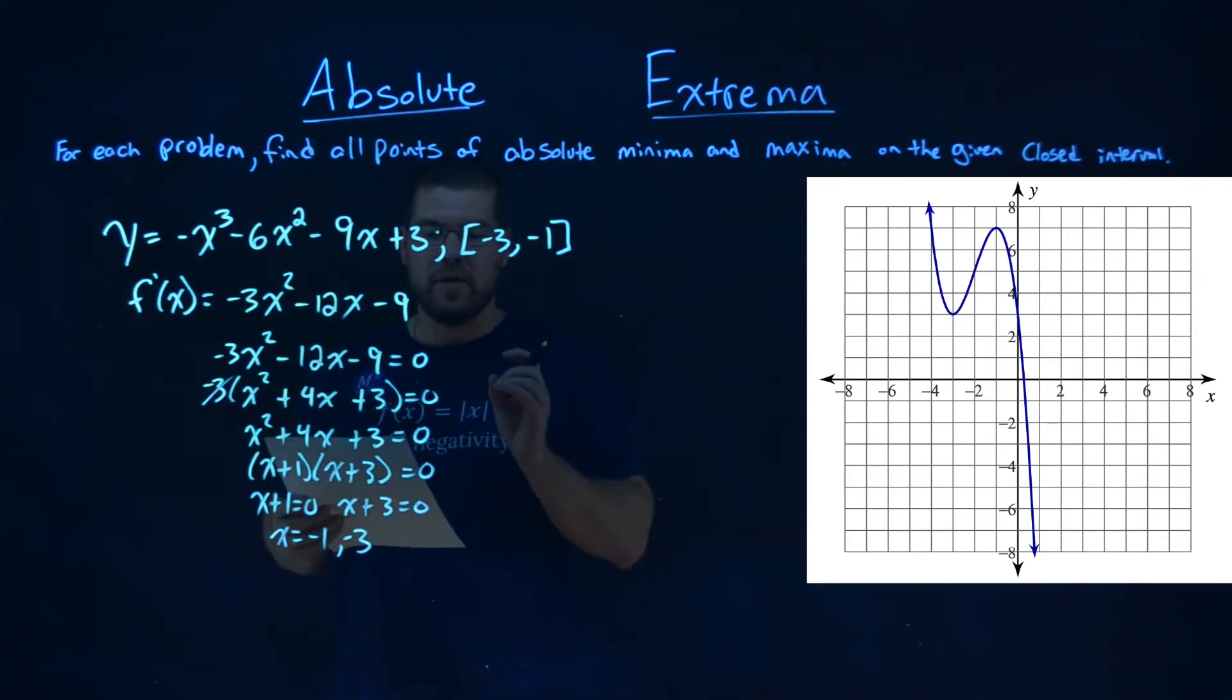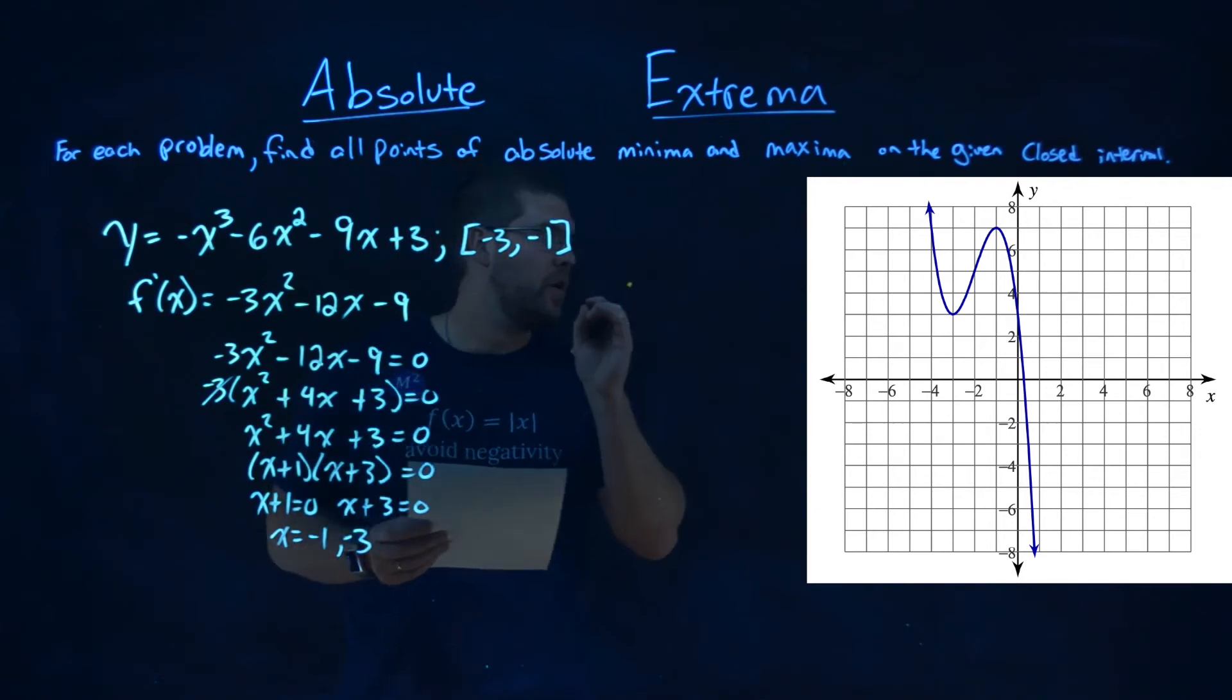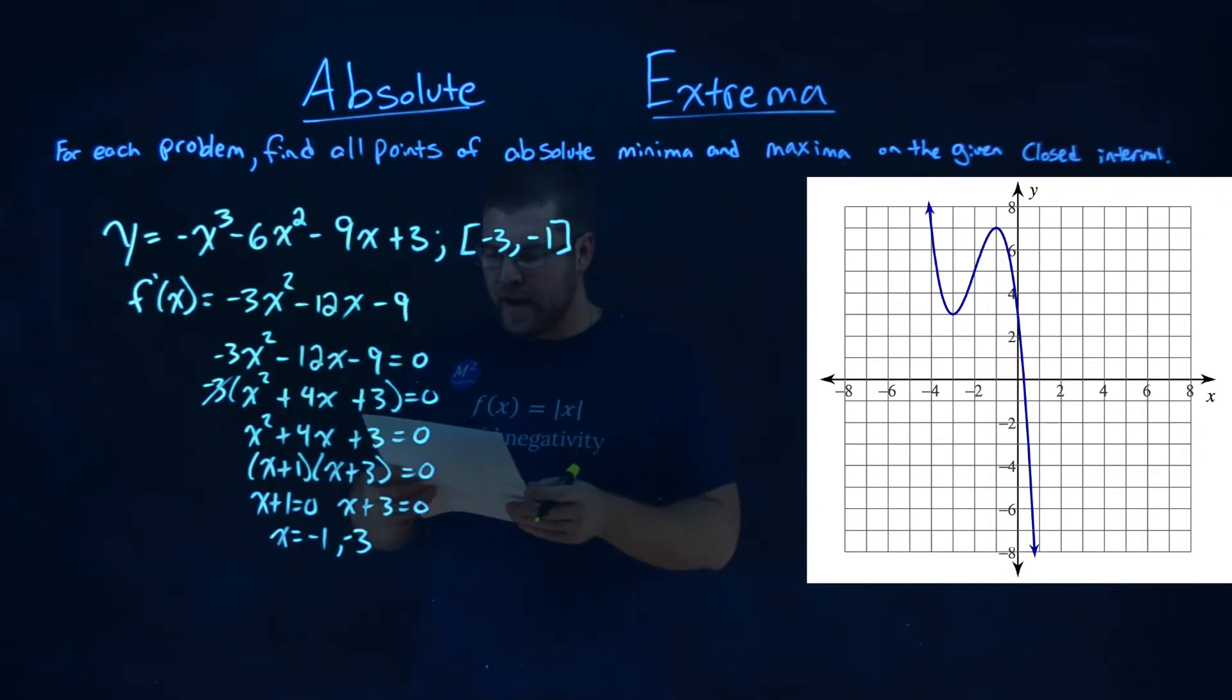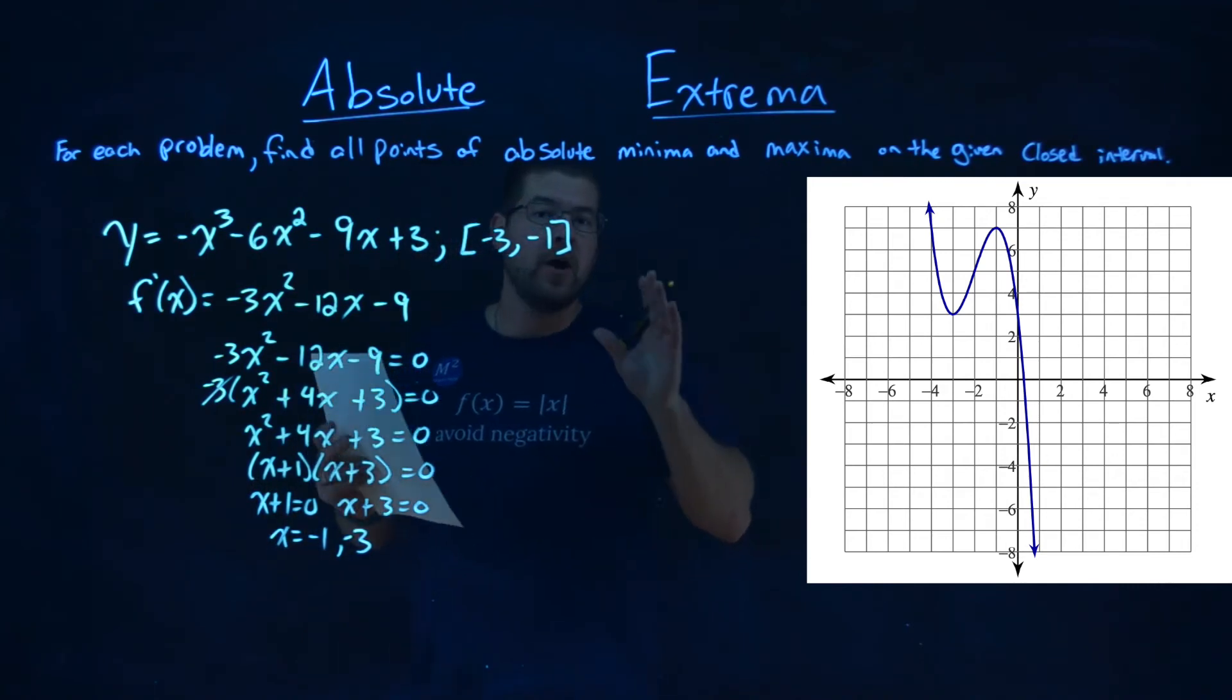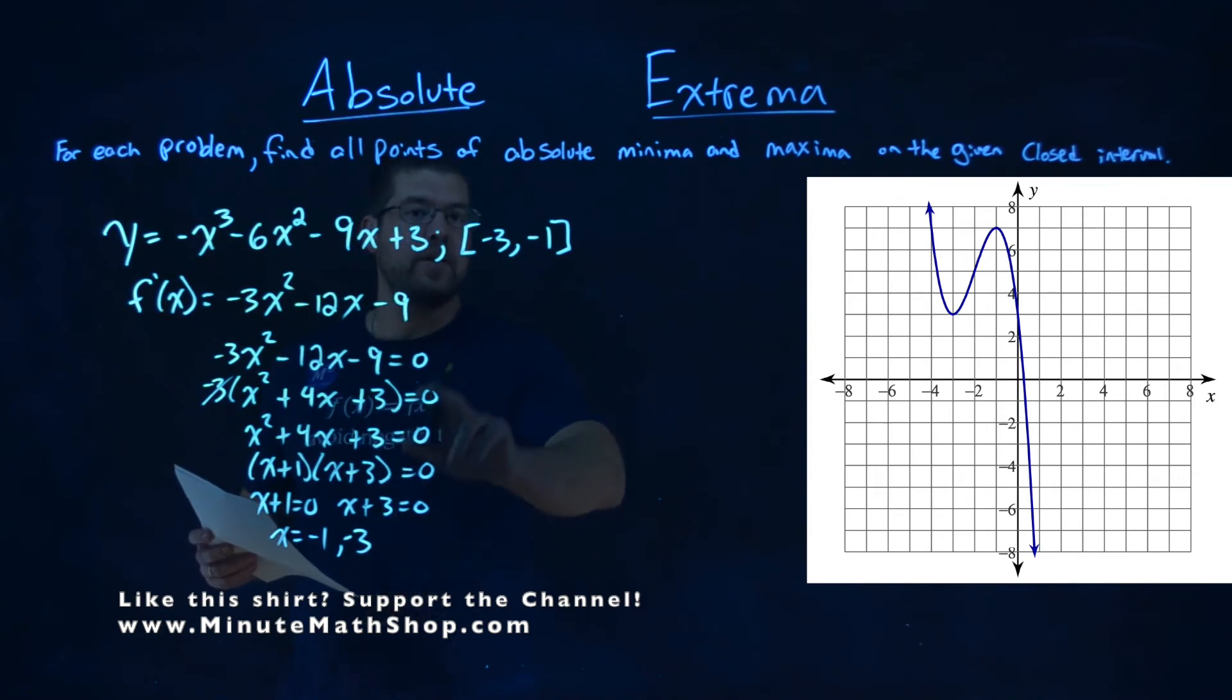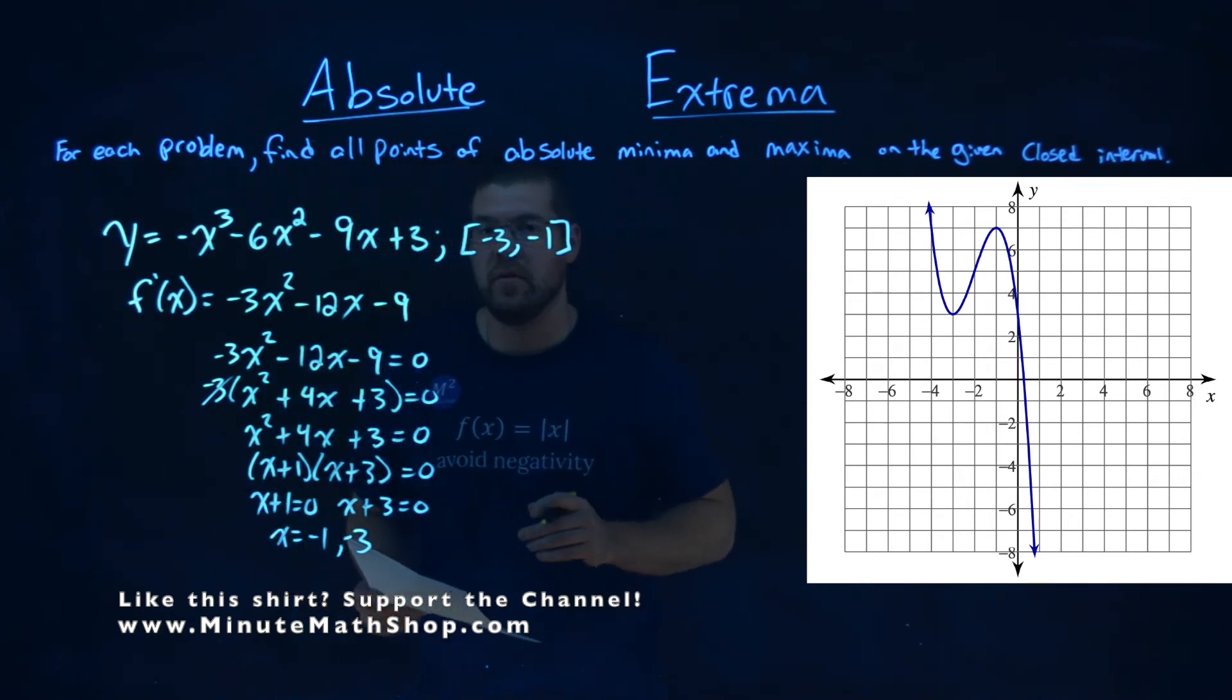Okay, so we have negative 1 and negative 3 here. Now, notice they are the two points of our endpoints on our closed interval right there. So when that happens, we just need to find what these values are. We need to check the critical points, which these are our critical points, and they're also the endpoints of our interval.